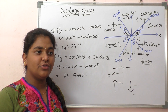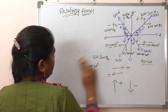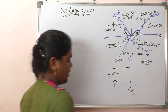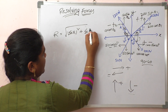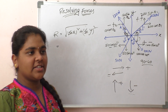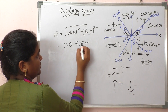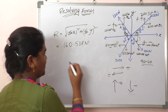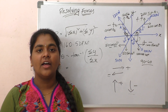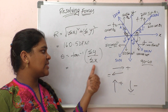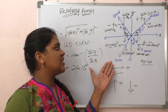Now, to find the resultant force R and the angle theta: R equals the square root of (sigma Fx squared plus sigma Fy squared), which gives 160.538 newtons. The angle theta equals tan inverse of (sigma Fy divided by sigma Fx), giving 24.15 degrees. This is how to resolve forces.